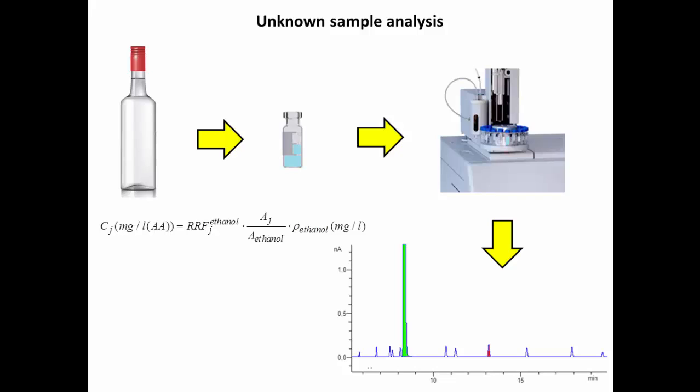As far as you can see from the formula, for J compound concentration determination, one needs just to calculate the peak areas from the chromatogram and use the RRF values which were determined earlier. In that case, we obtain the data in mg per litre of absolute alcohol in full compliance with international regulatory documents.